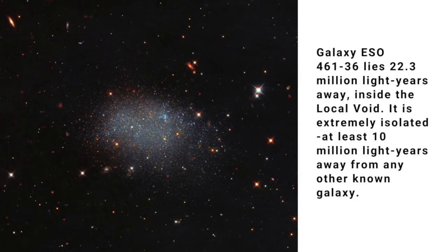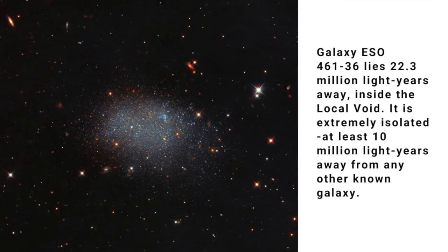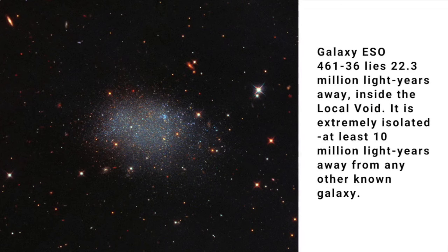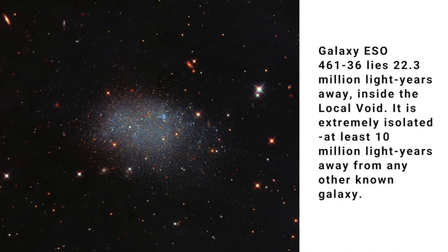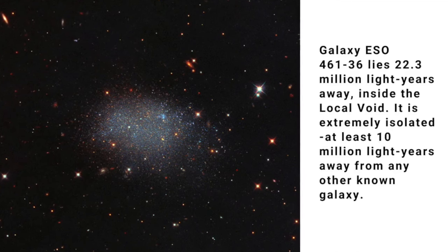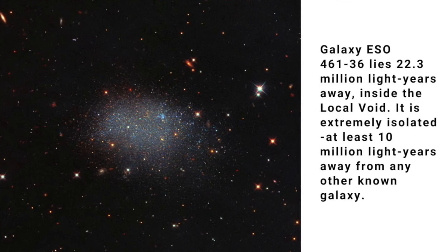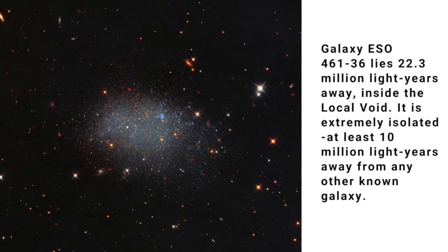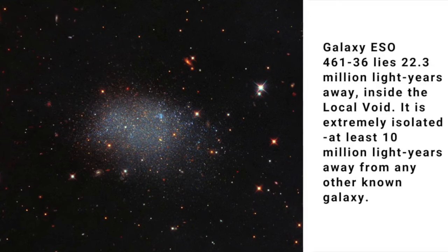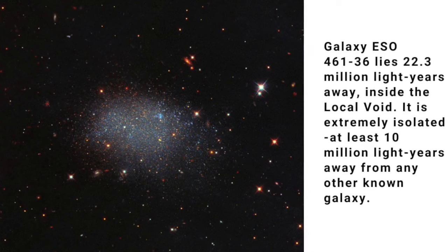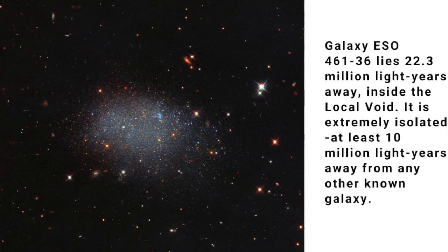The closest void to Earth is known, not surprisingly, as the Local Void. It's at least 150 million light-years across, and its nearest edge lies just beyond our local group of galaxies. Its size was estimated in part from observations of an isolated dwarf galaxy known as ESO 46136, located inside it.